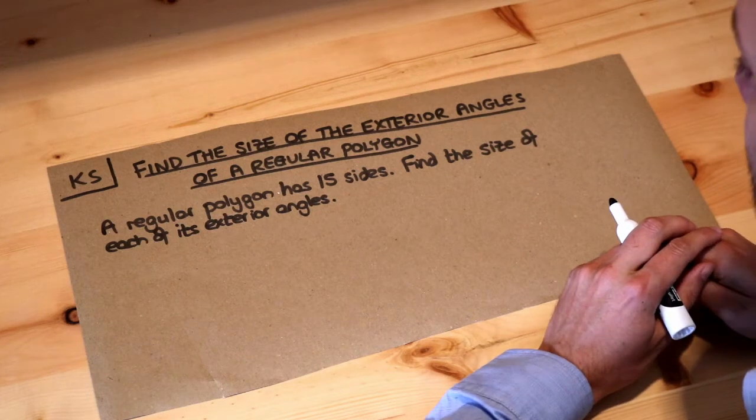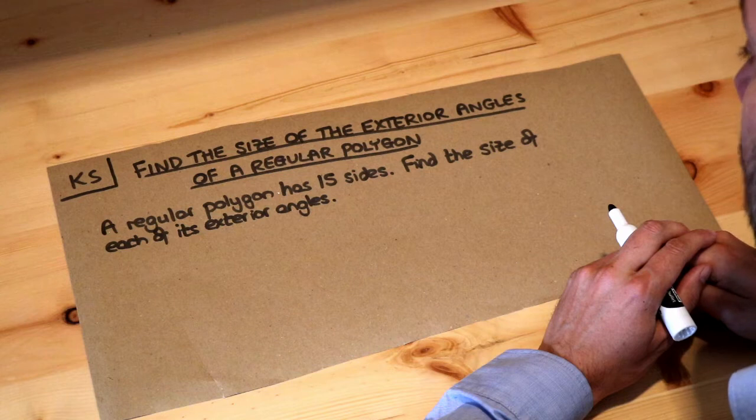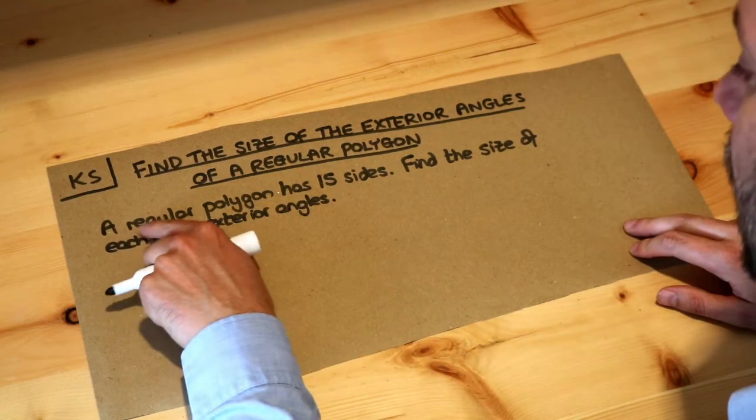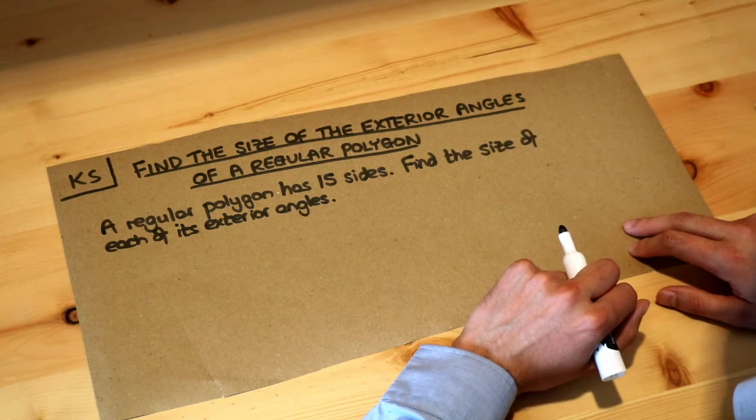Hello and welcome to this Dr Ross Maths key skill video on finding the size of the exterior angles of a regular polygon. So we've got this problem here: a regular polygon has 15 sides, find the size of each of its exterior angles.